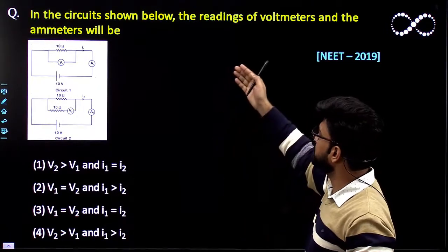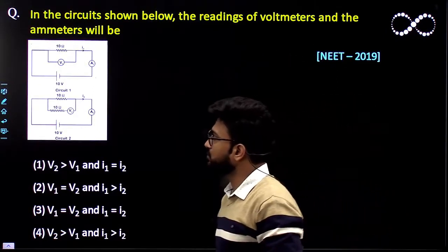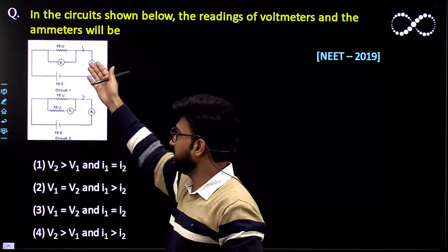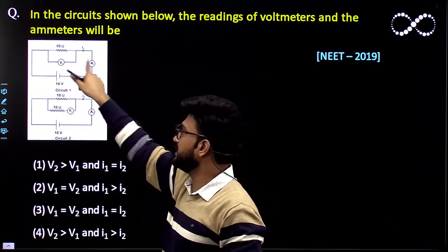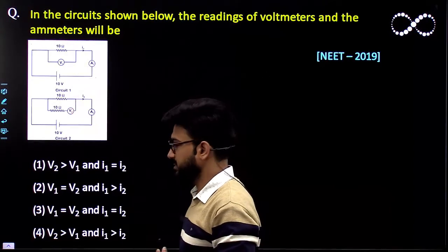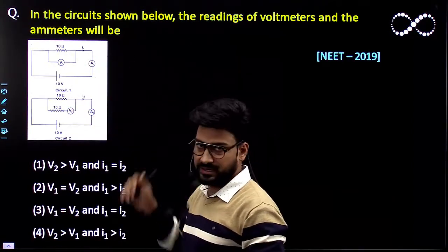Question says in the circuit shown below the reading of the voltmeter and the ammeter will be. So you have been given circuit A, circuit 1, circuit 2. So what would be the reading of this voltmeter, ammeter and voltmeter and ammeter? You need to find out the relationship between V1, V2 and I1 and I2.